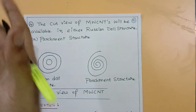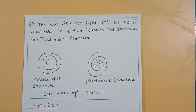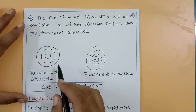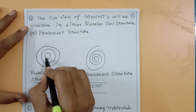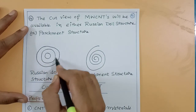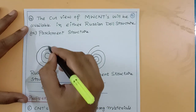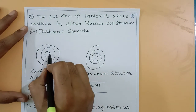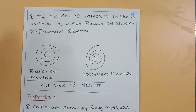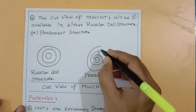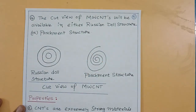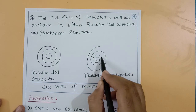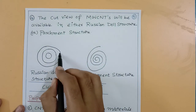Multi-walled carbon nanotubes have two types of arrangement. The first is the Russian doll structure — concentric rings where the first, second, and third carbon nanotubes are nested inside each other. The second is the parchment structure — graphene sheets are rolled like a scroll, showing various layers: wall 1, wall 2, wall 3 — multi-walls.